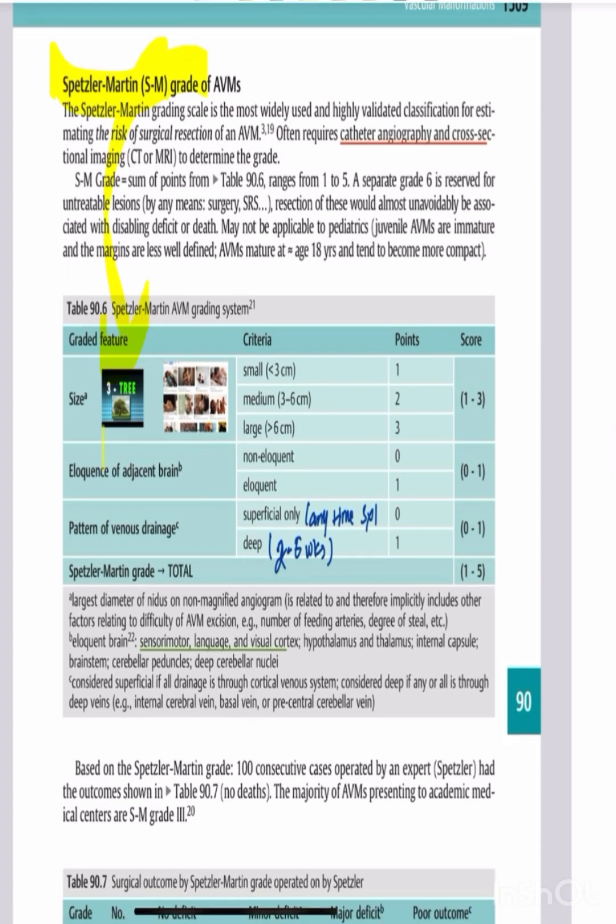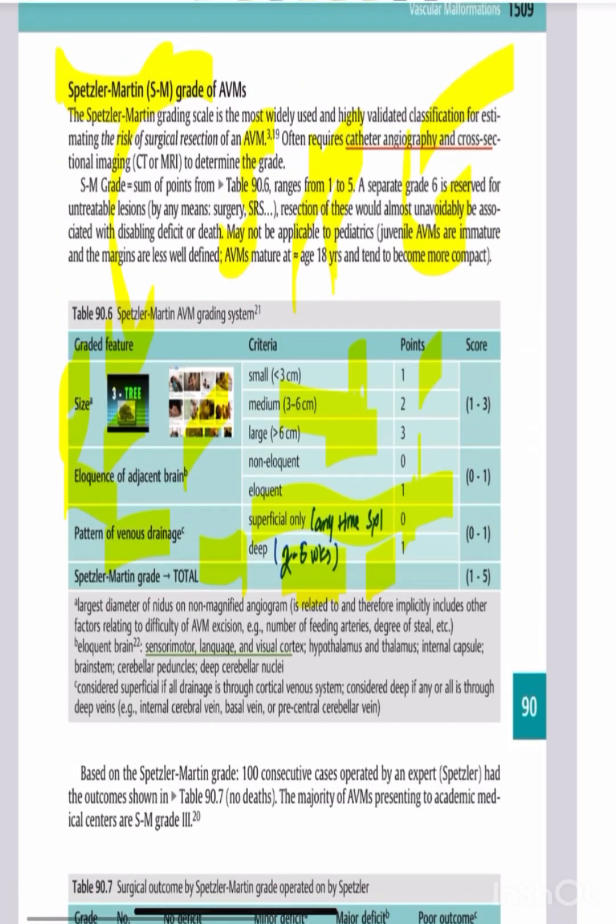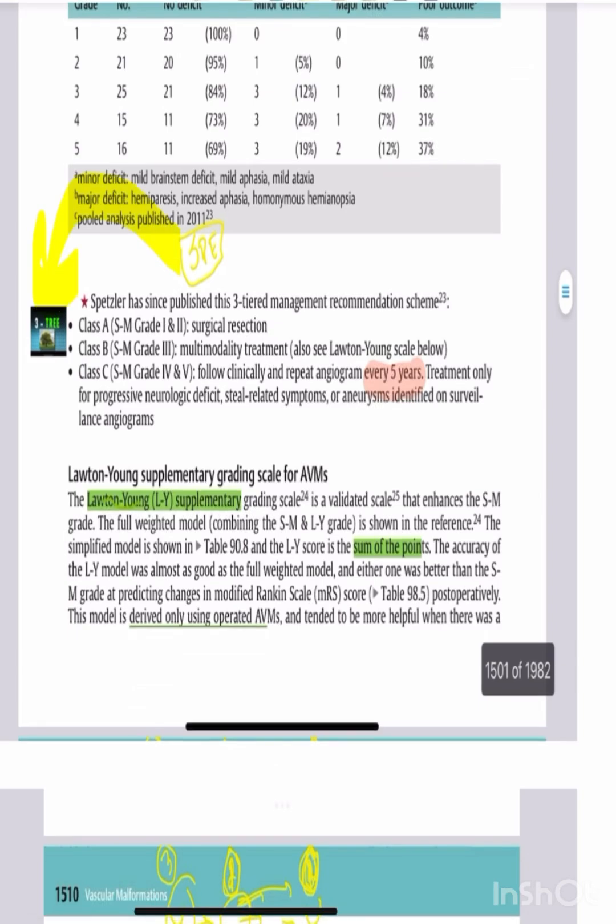The Spetzler-Martin grading scale uses size (less than 3cm, 3-6cm, or greater than 6cm), eloquence of brain location, and pattern of venous drainage - superficial or deep. The grades range from 1 to 5, with grades 4-5 being high grade and more challenging for surgical resection.